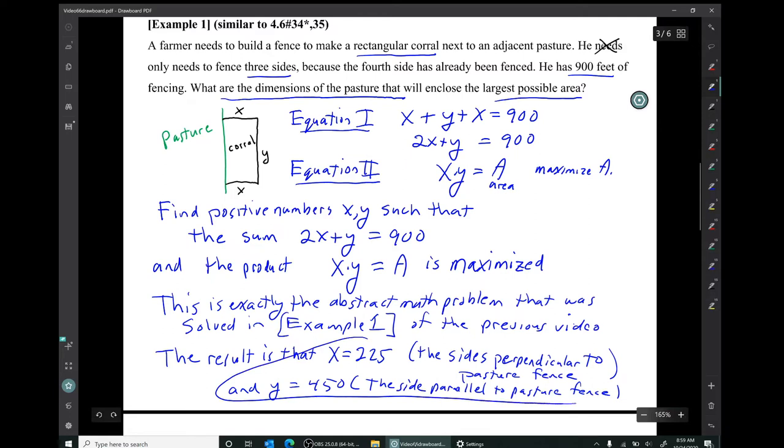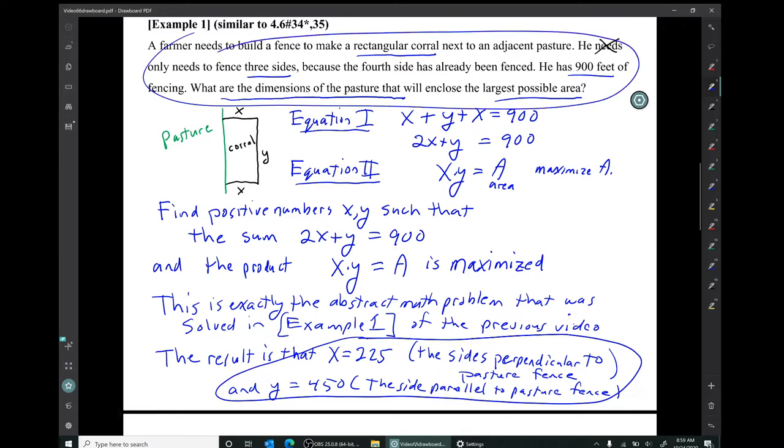So there is our result: x is 225 and y is 450. Now, in this problem, we were not given the letters x and y. So you can't just tell the farmer, make x equals 225 and y equals 450, because the farmer doesn't know what you're talking about when you say x and y. So you need to actually say what this x is. It's the length of the side that's perpendicular to the pasture fence. And the y is the length of the side that's parallel to the pasture fence.